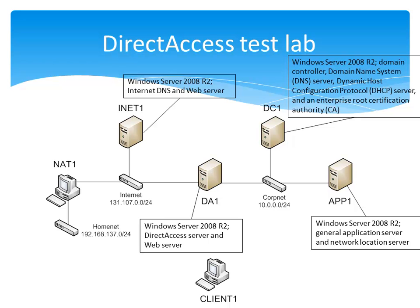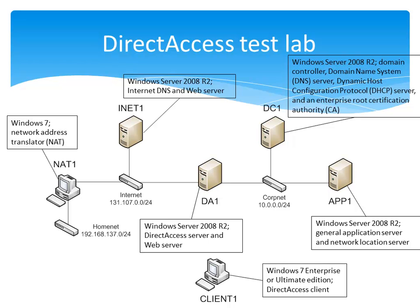iNet1 is running Windows Server 2008 R2 and is acting as an internet DNS and web server. NAT1 is running Windows 7 and is acting as a network address translator, or NAT, between the internet and homenet subnets. NAT1 is emulating a cable modem or wireless access point you might have in your home that connects your home network to the internet. And finally we have Client1 running Windows 7 Enterprise or Ultimate Edition, acting as the Direct Access client. Please note that both DA1 and NAT1 are connected to multiple subnets — two subnets each — and therefore require two separate network adapters installed.